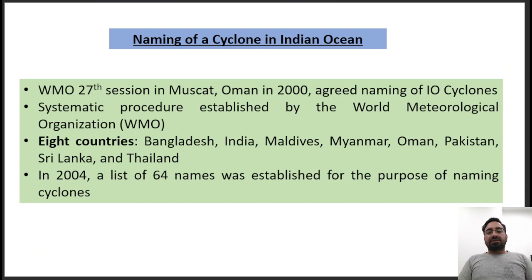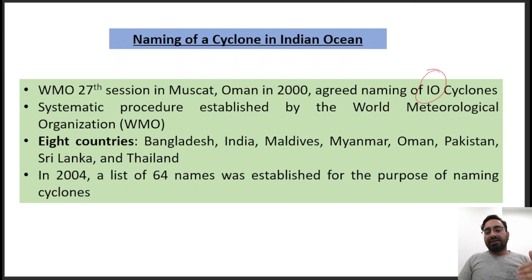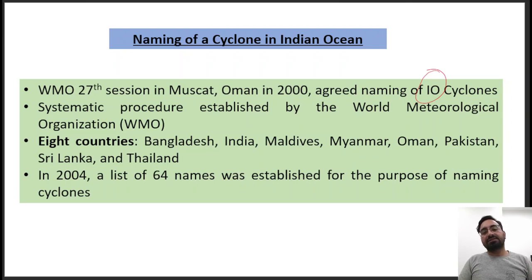If we look at history, the WMO in its 27th session agreed on naming the tropical cyclones which come in the Indian Ocean. Earlier these tropical cyclones were getting names randomly, but what was needed was a systematic procedure to name them. So in 2000 they agreed that tropical cyclones need to be named, while a systematic naming system was already in place in the Atlantic Ocean.